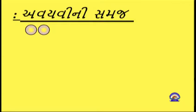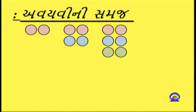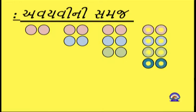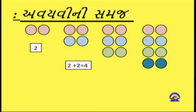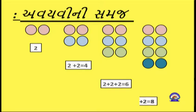સંપૂર્ણ સંખ્યા સમજ્યા. હવે આપણે અવ્યયીની સમજ મેળવીશું. સ્ક્રીન નિહાળો: 2 લખોટી, તેમાં 2 ઉમેર્યા = 4. ફરી 2 ઉમેર્યા = 6. ફરી 2 ઉમેર્યા = 8. 2+2+2+2 = 8. 2, 4, 6, 8 - આ 2 ની અવ્યયી (ગુણિત) છે.